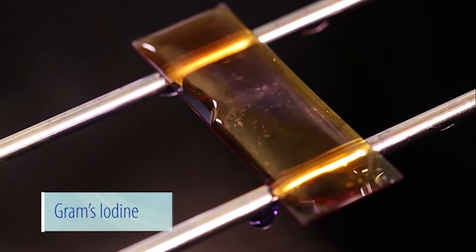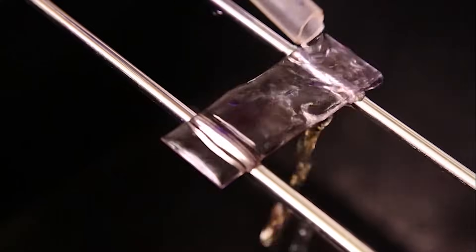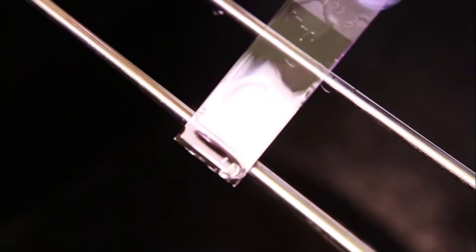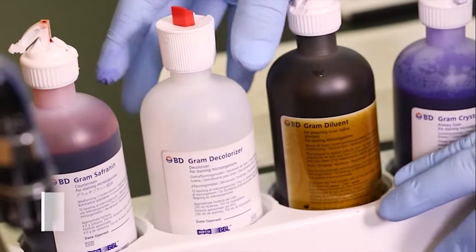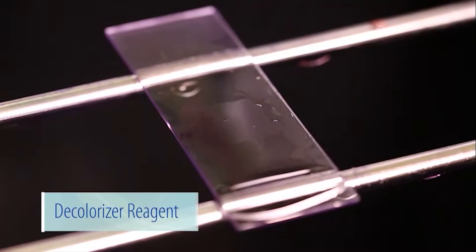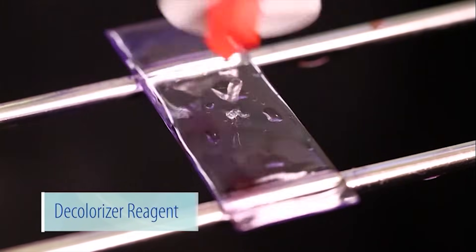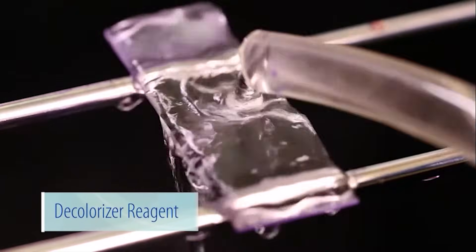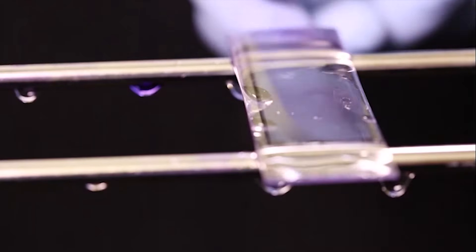After 15 seconds, gently rinse the slide with water. Tilt the slide to remove the excess water. Add the decolorizer to the slide and rinse immediately with water to help prevent over-decolorizing. Tilt the slide again to remove the excess water.